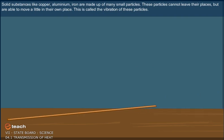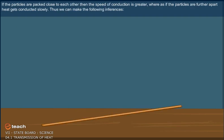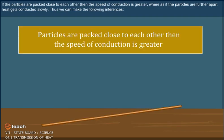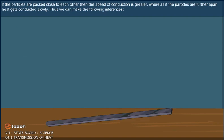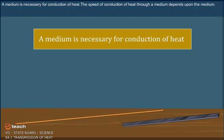Solid substances like copper, aluminium, iron are made up of many small particles. These particles cannot leave their places but are able to move a little in their own place. This is called the vibration of these particles. If the particles are packed close to each other, then the speed of conduction is greater. Whereas, if the particles are further apart, heat gets conducted slowly. Thus, we can make the following inferences. A medium is necessary for conduction of heat.